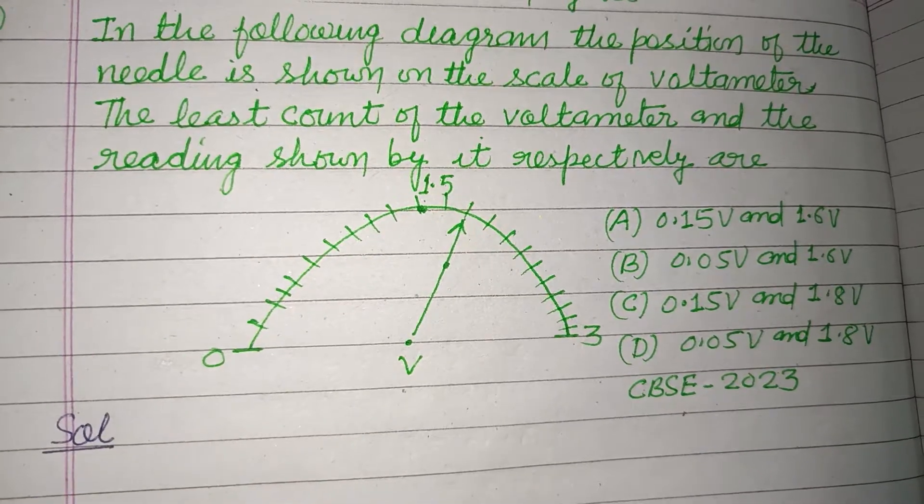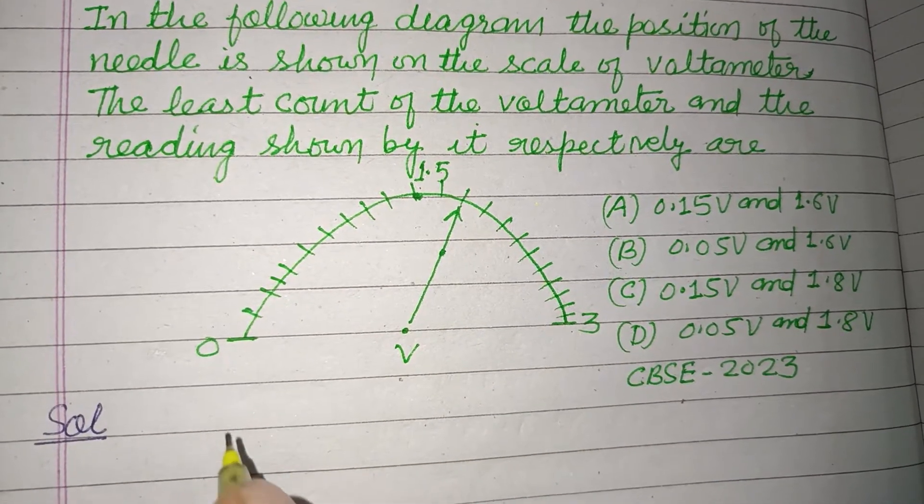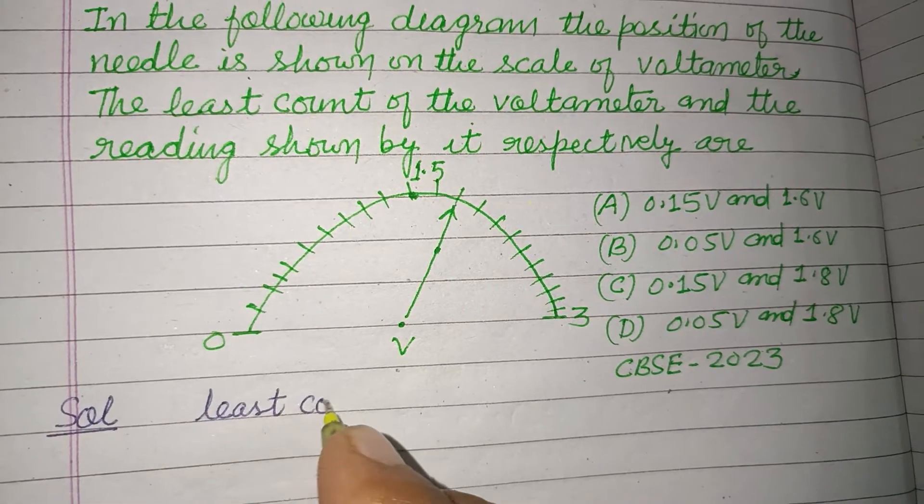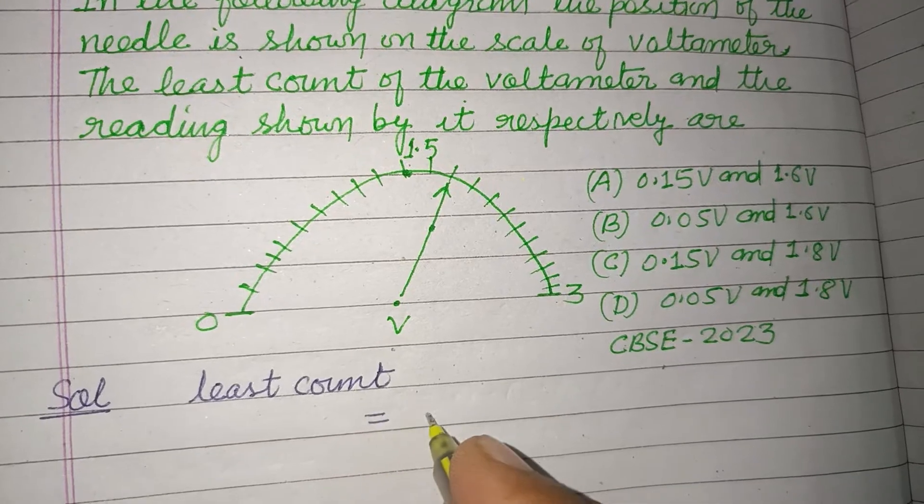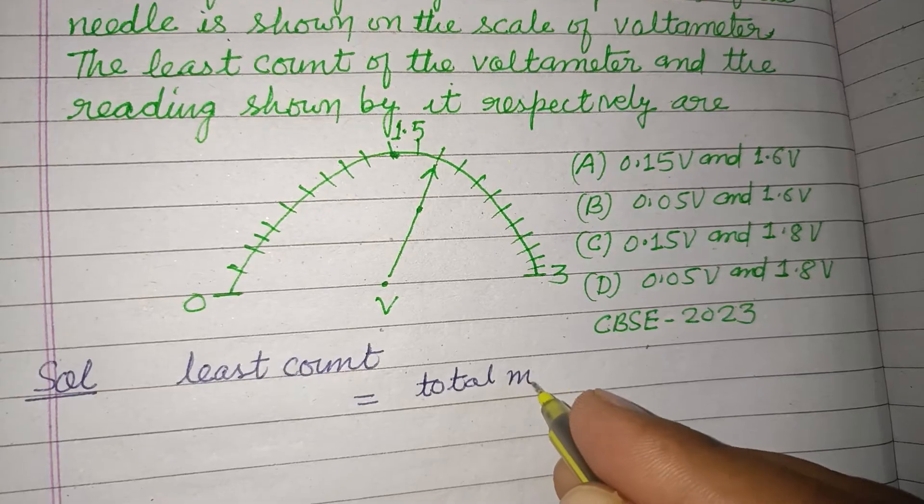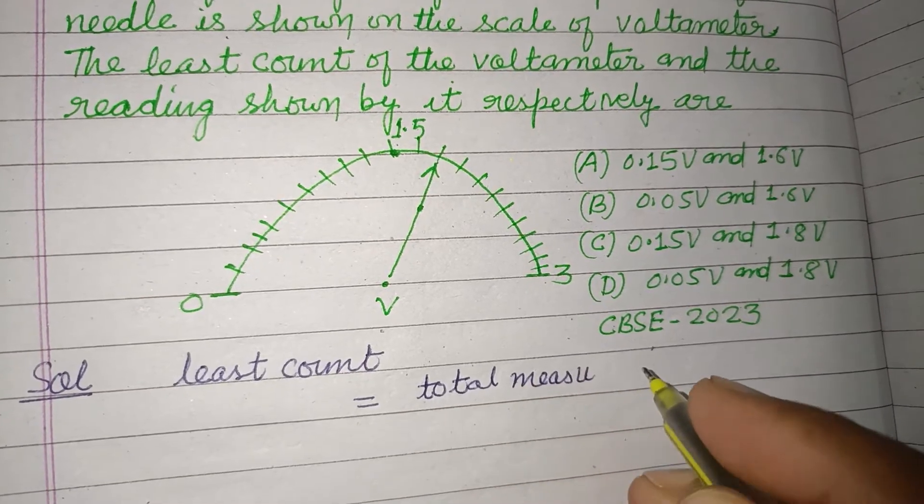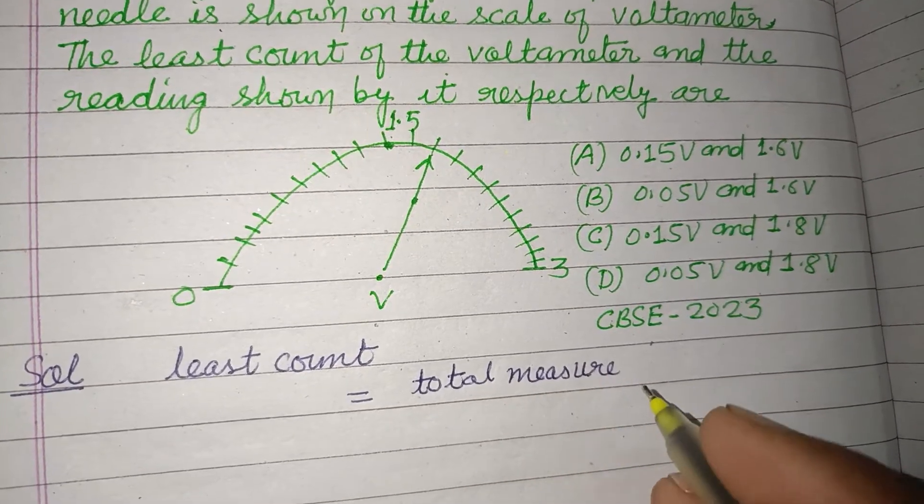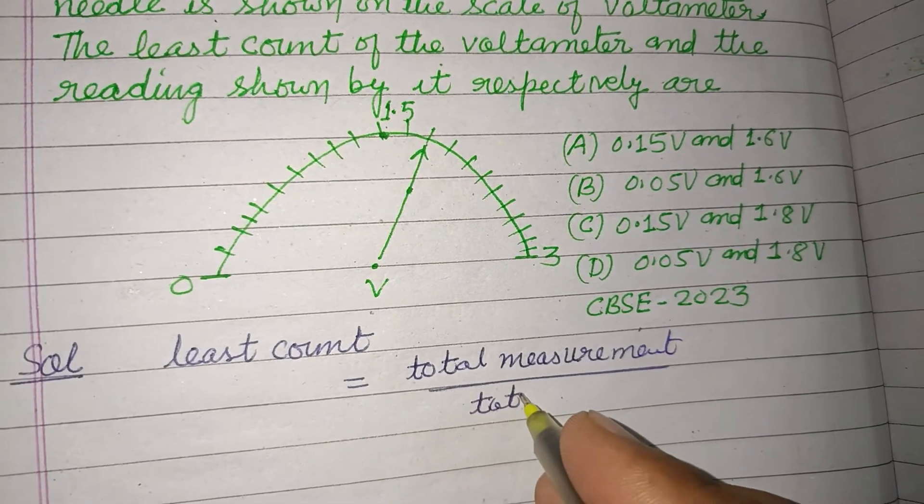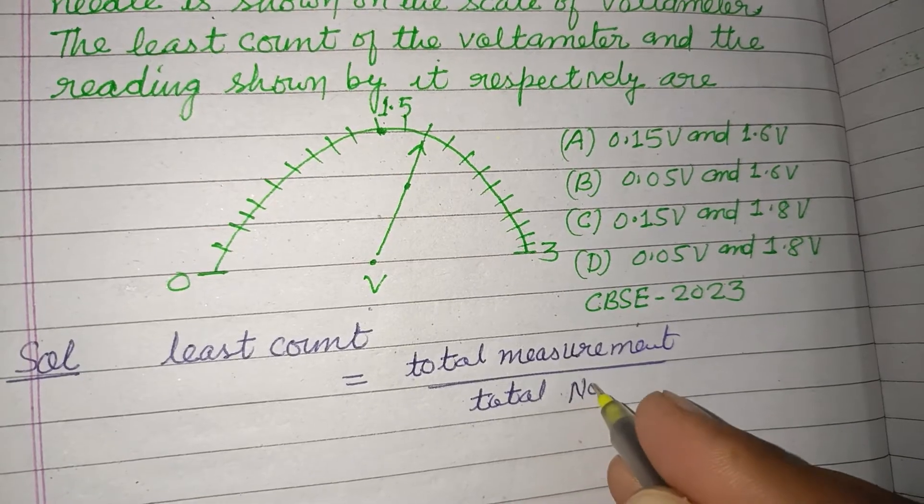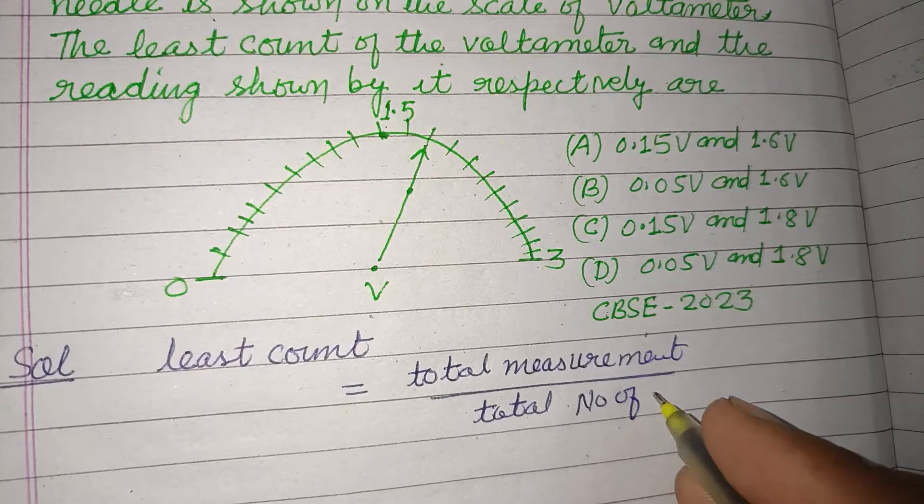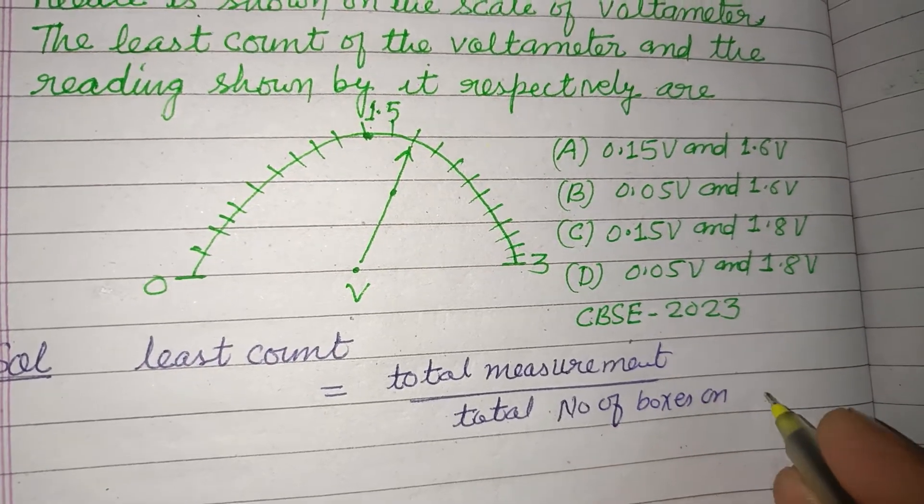So students, here least count is required. Least count is equal to total measurement divided by total number of boxes on scale.